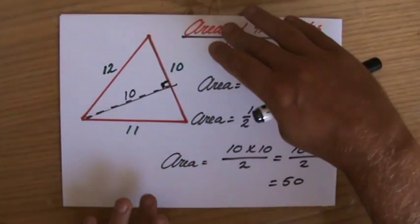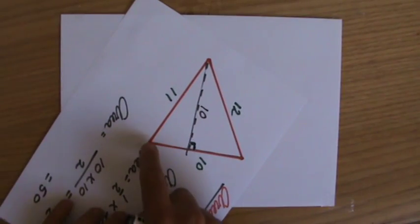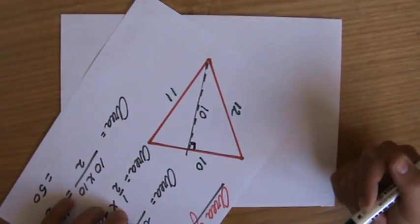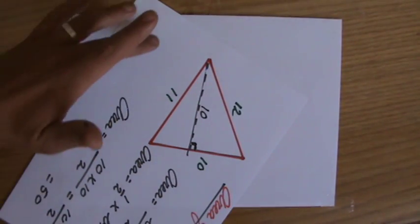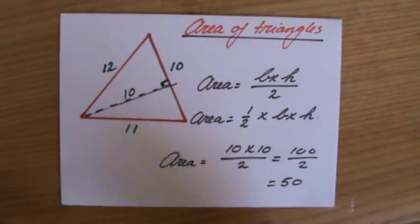Base times height. Because perhaps if I rotate it a little bit, maybe now you see it. It is the base 10 times the height, which also happens to be 10. So base times height divided by 2, where the base and the height make the angle of 90 degrees.